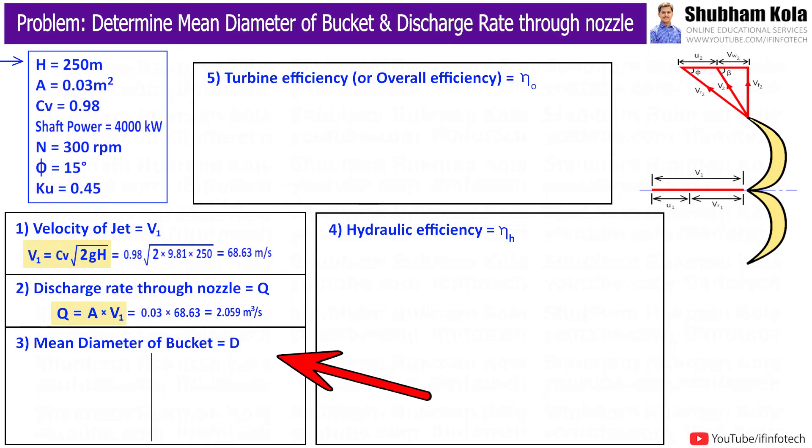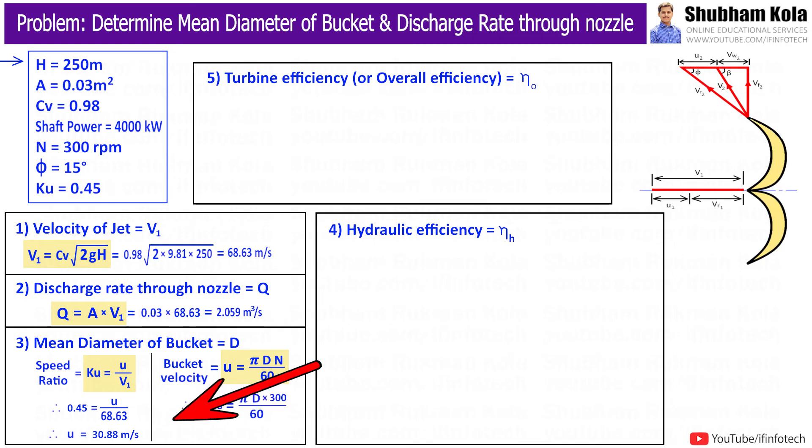Next we want to calculate mean diameter of bucket capital D. So, to calculate this value, we will use formula of bucket speed, small u, which is π DN by 60. And here we have speed capital N equal to 300 rpm. For the value of small u, we have speed ratio, i.e. bucket speed by velocity of jet is 0.45. So from here, we will get bucket speed small u. Therefore, to calculate mean diameter of bucket capital D, I will substitute calculated values of small u and speed N. So this will give me the value of mean diameter of bucket capital D as 1.966 m.